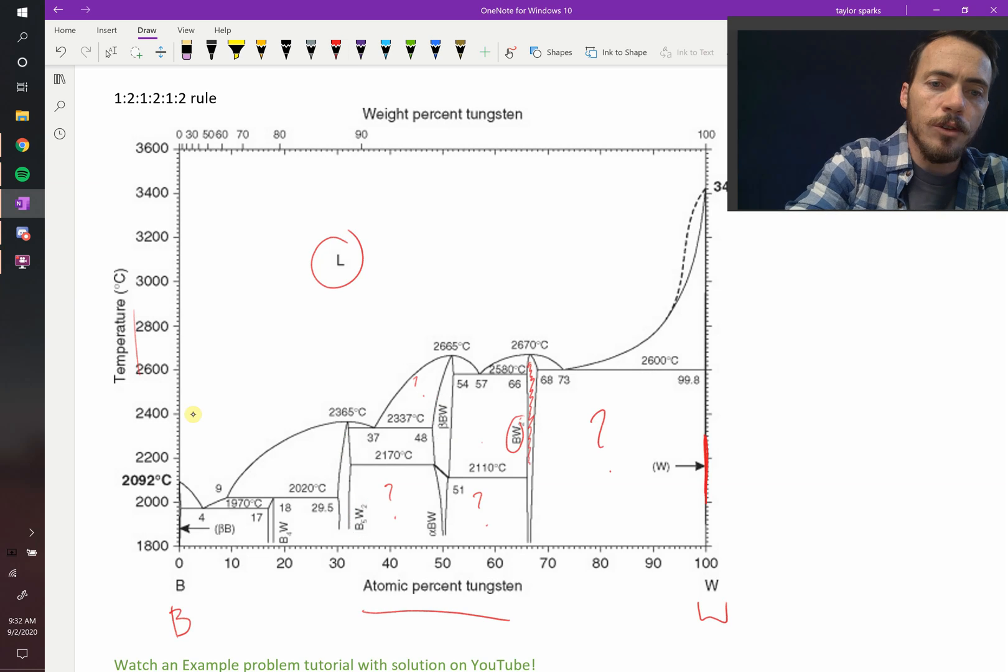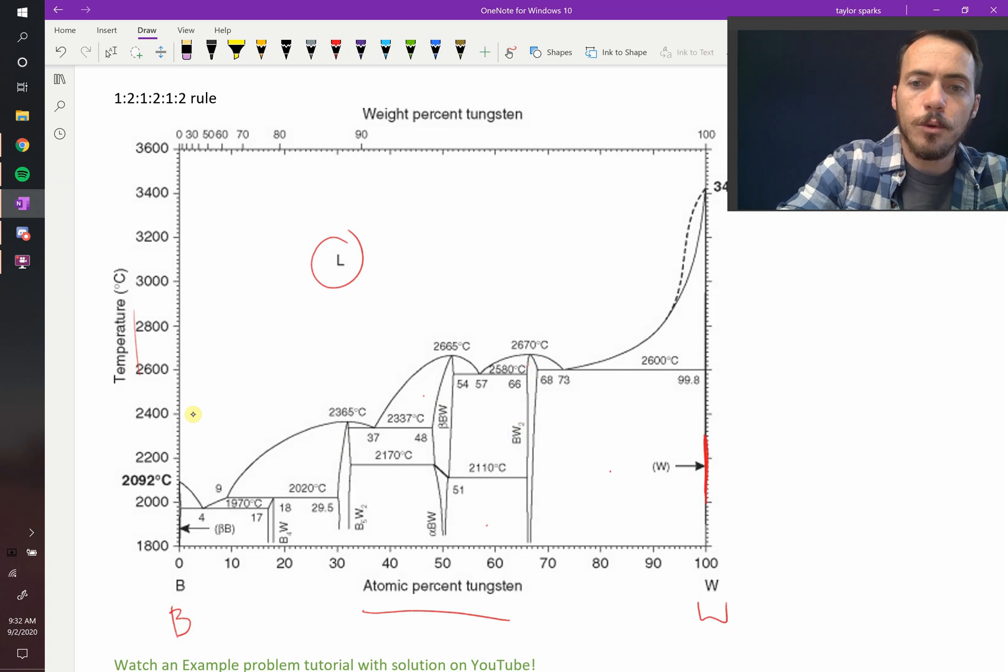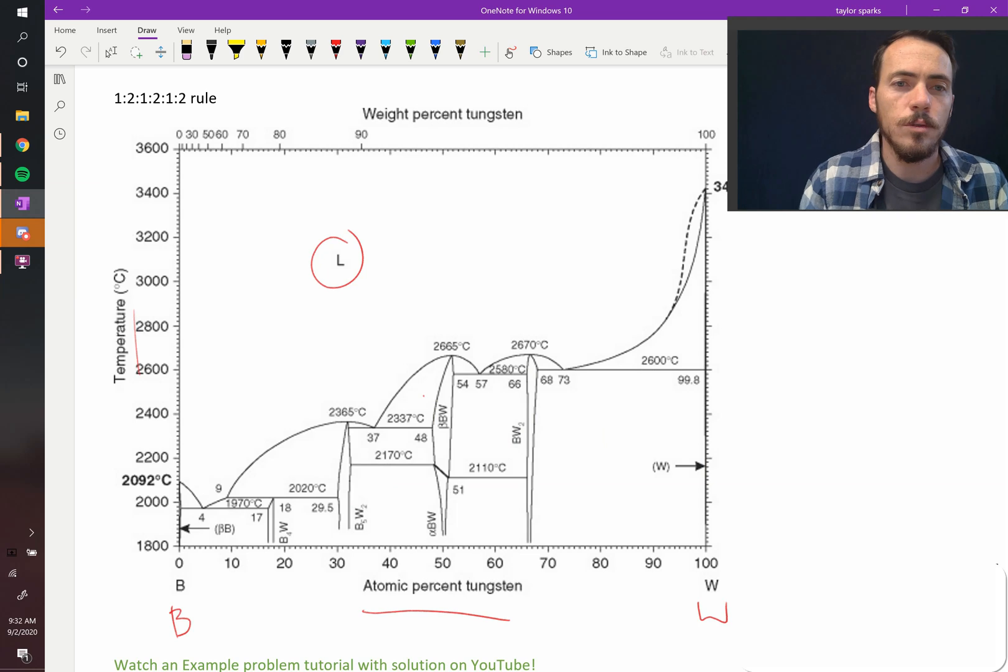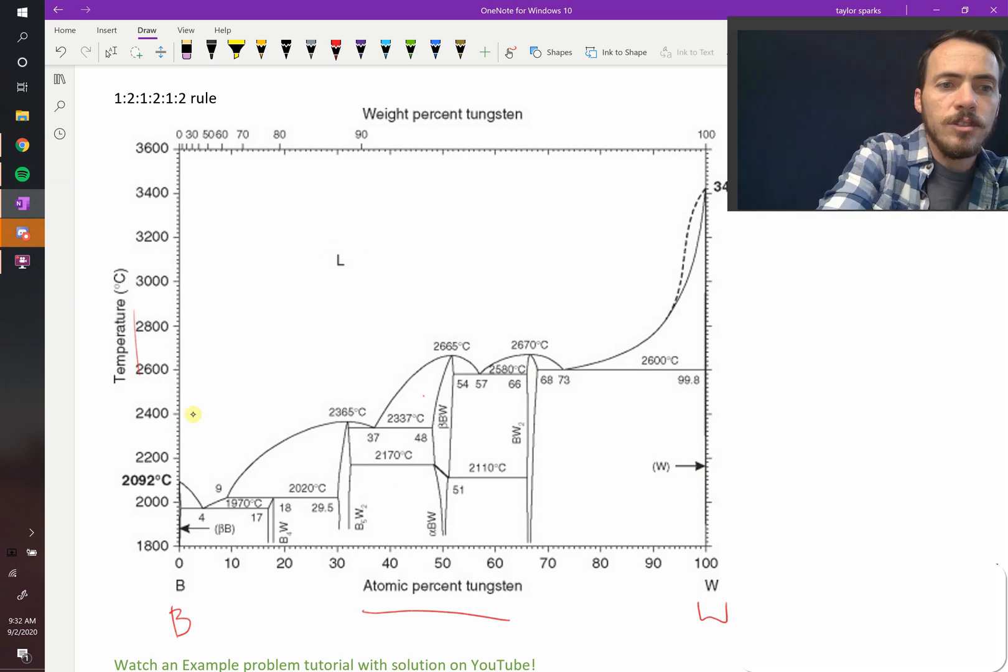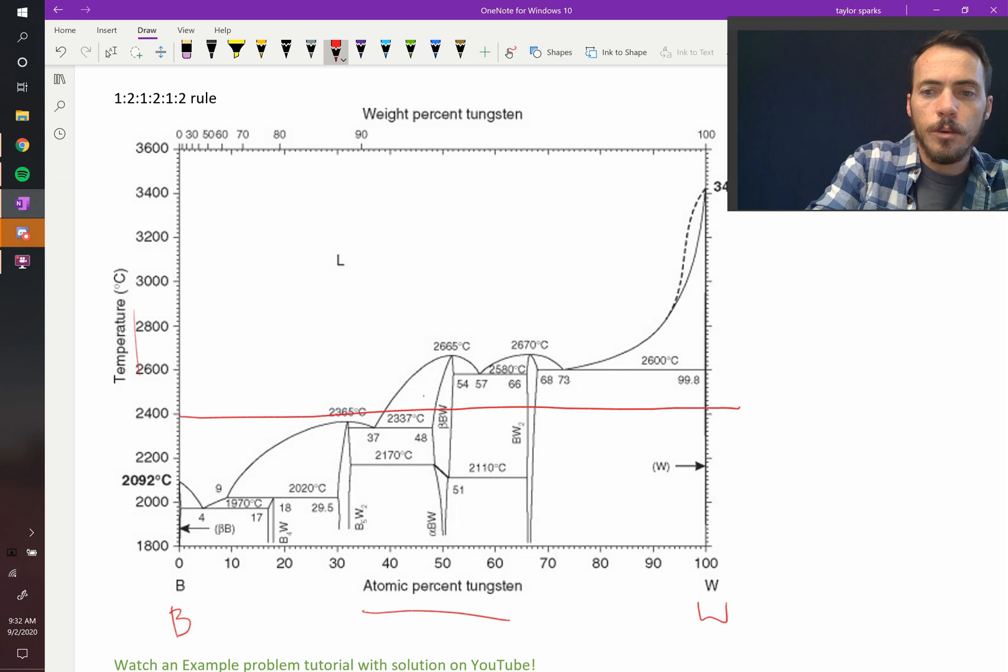Well, there's some things that you do with labeling phase diagrams. The first rule, and the most important thing, is that you follow the 1-2-1-2 rule, meaning that as you go left to right, at any given temperature, let's say you take this temperature slice and you go all the way across.